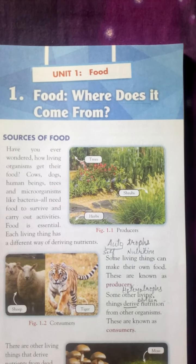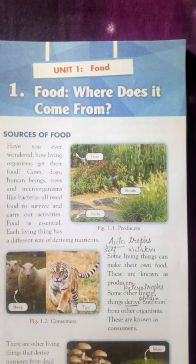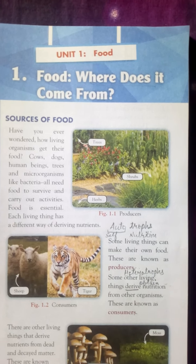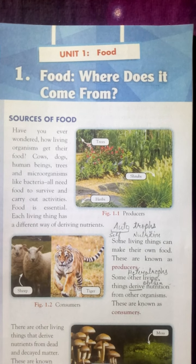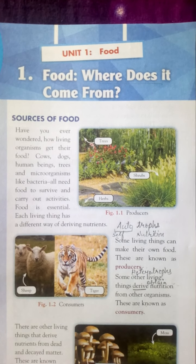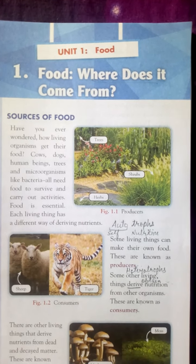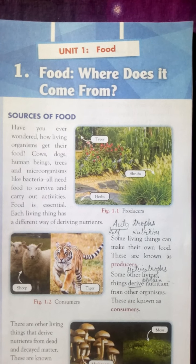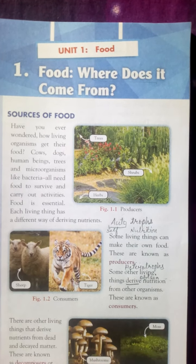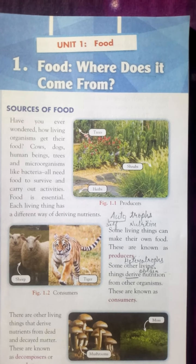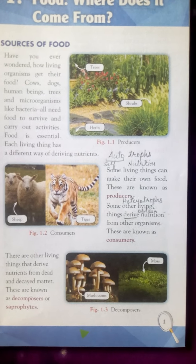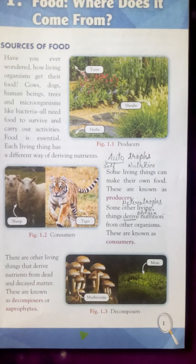Where does this food come from? All living organisms get their food from either plants or animals. So the major sources of food are plants and animals. Different organisms derive their nutrition in the form of plants or animals, and on the basis of this nutrition, all organisms are divided into two categories.